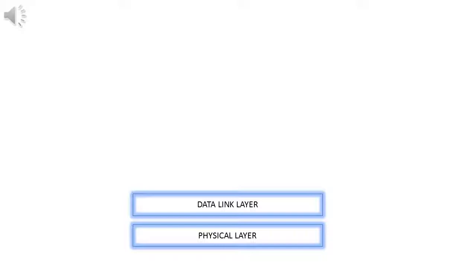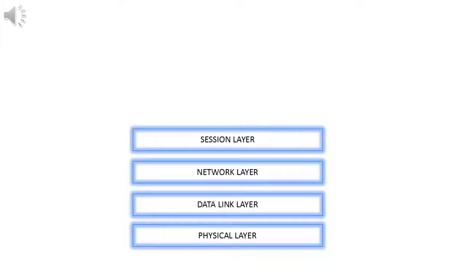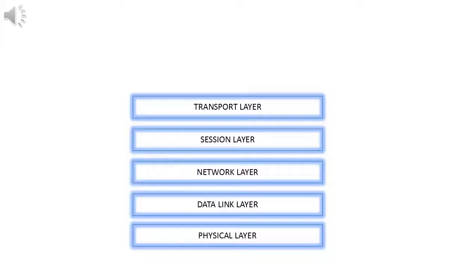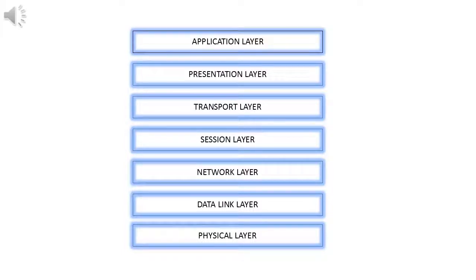It is composed of seven layers: physical layer, data link layer, network layer, session layer, transport layer, presentation layer, and topmost layer is called application layer.